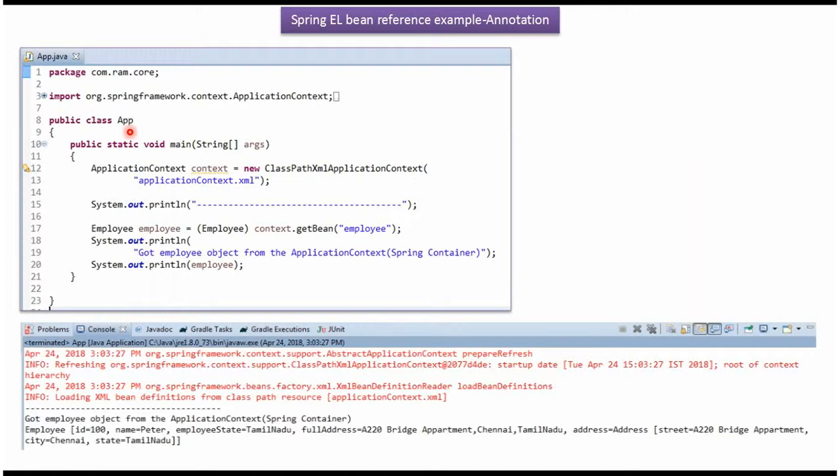Here I have defined a class App. I have created an ApplicationContext object by reading the Spring configuration file. Using the getBean method of ApplicationContext object, I'm getting the Employee object from the Spring container and displaying it. Here you can see the output and the Employee object information.